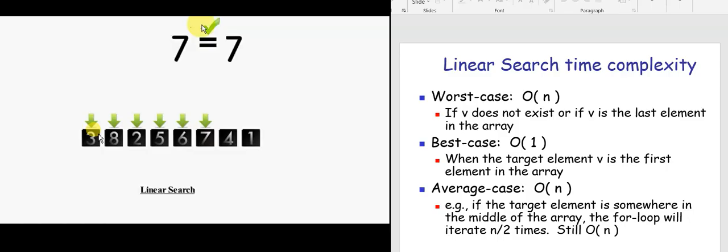And in average case, whether the element is in the middle section or after the mid-section, it will be the same as the worst case. So for linear search, the time complexity is sufficient.